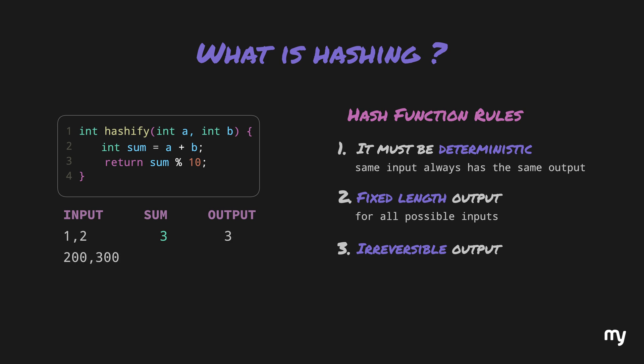Similarly, if we pass 200 and 300, the sum becomes 500. The last digit of 500 is 0, which is returned as the output. Now, no matter how many times we pass 1 and 2, the output will always be 3. Similarly, if we pass 200 and 300, the output will always be 0. So, rule number 1 is satisfied. That is, the same input always returns the same output.